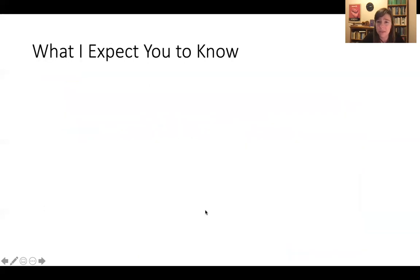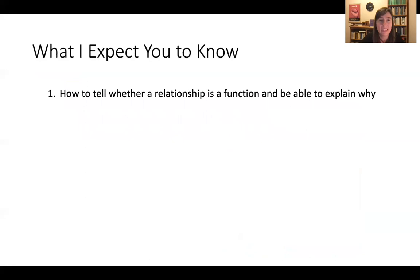All right. So let's review what I actually expect you to know about functions. I expect you to be able to tell whether a relationship is a function and be able to say why. And if you're saying why, your explanation should either be something like this is a function because every output has exactly one input associated to it. And it's not a function because here is an input that has multiple outputs associated to it. So you should be able to tell whether something's a function and give an explanation along those lines that really refers back to the definition.